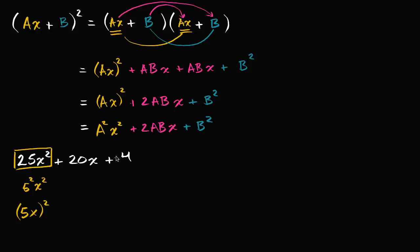This four here, that's a perfect square. That's the same thing as two squared. And let's see, 20 right over here, if we wanted to fit this pattern, we would say that A is five and B is two.